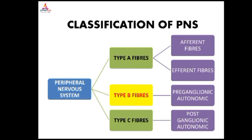Type B fibers are also known as preganglionic autonomic fibers. These are medium diameter myelinated axons and conduct action potentials at a lower speed of 3 to 15 meters per second. Type C fibers are known as postganglionic autonomic fibers, and also serve as visceral and somatic afferents for pain and temperature sensations. These fibers are small diameter non-myelinated axons that conduct action potentials at a very slow speed of 2 meters per second or less.